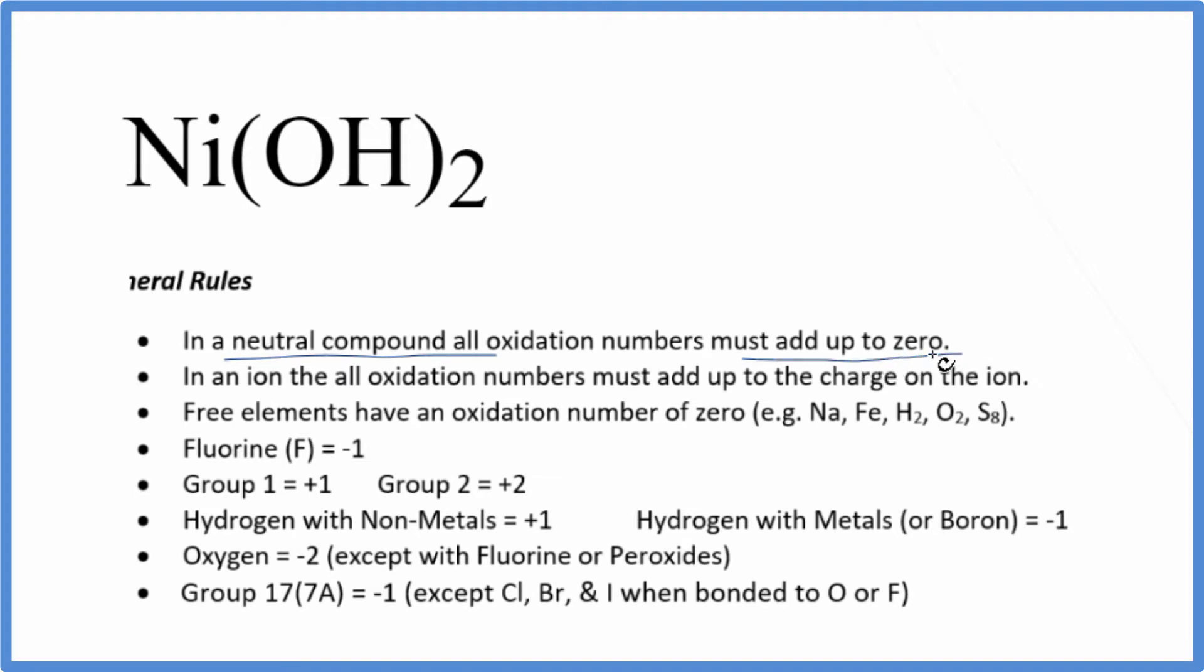All the oxidation numbers are going to add up to zero. Next, we don't know the oxidation number for the nickel because that's a transition metal, so we're just going to call that X. Oxygen has an oxidation number of -2 with just a few exceptions.